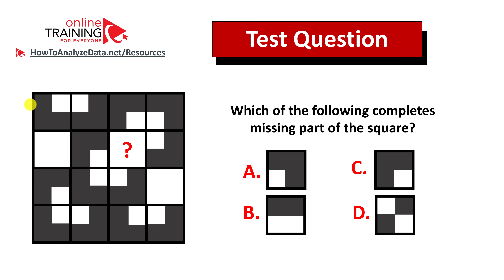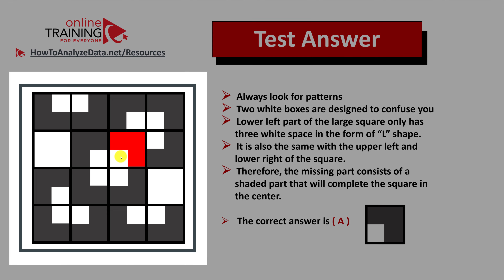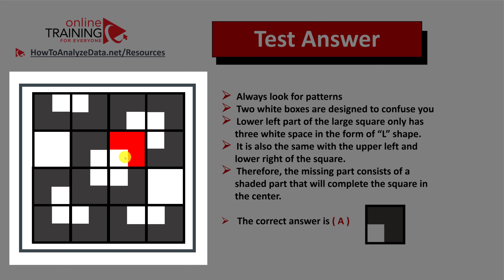Did you figure out the answer? Let's continue to see how we can solve this challenge together. Look for patterns. If you look closely, you will see that the middle box right in the center of the larger square is symmetrical. The L-shape at the bottom and another shape in the upper right corner represent symmetricity for this middle square, which consists of four small squares.